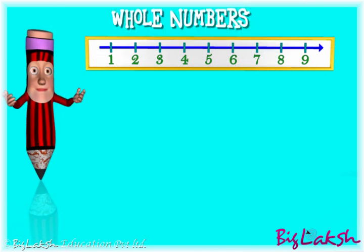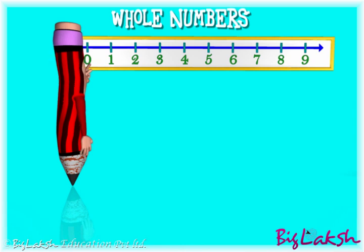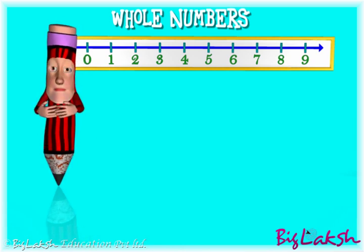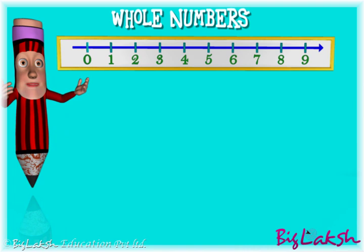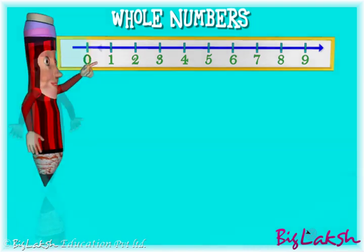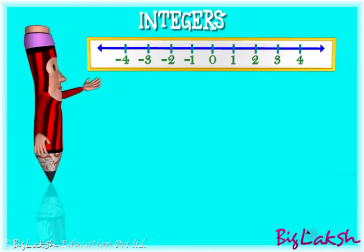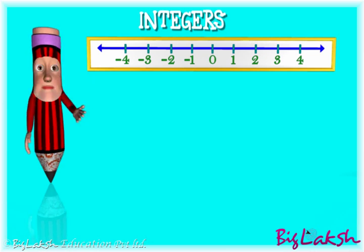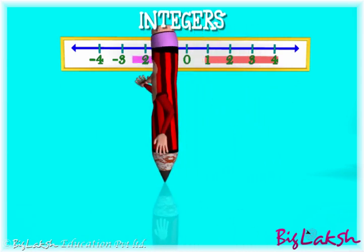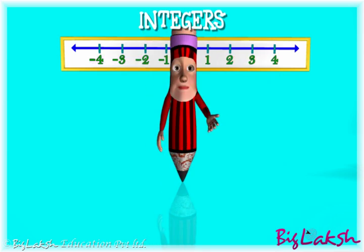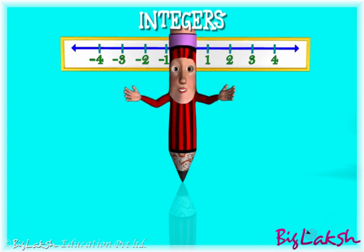Now let us move on to whole numbers. Integers include all natural numbers, their negatives and zero. You can notice that integers extend indefinitely on both sides of the zero.